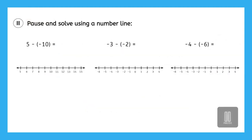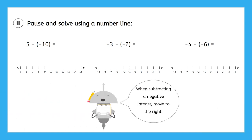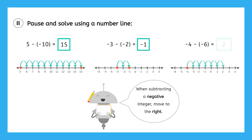Pause the video now to try the practice problems on the PDF using a number line. Remember, when subtracting a negative integer, we move right on the number line. For the first problem, 5 minus negative 10: starting at 5 and moving to the right 10 puts us at positive 15. For the second problem, negative 3 minus negative 2: we start at negative 3 and move to the right 2, putting us at negative 1. And finally, negative 4 minus negative 6: we start at negative 4 and move to the right 6, which puts us at positive 2. Great work!